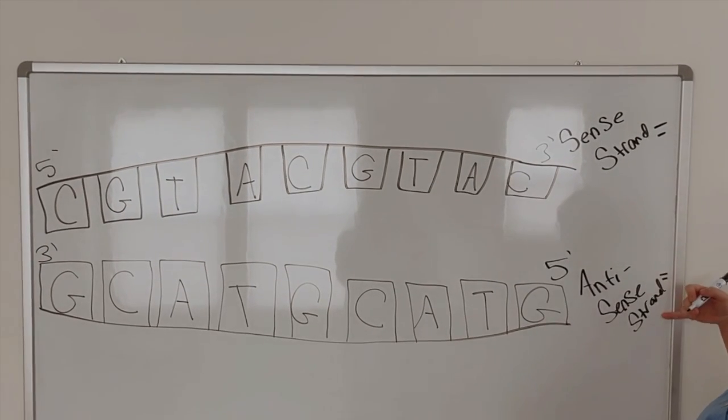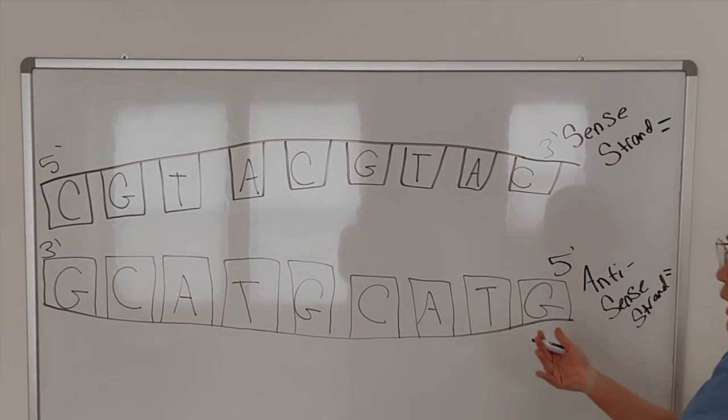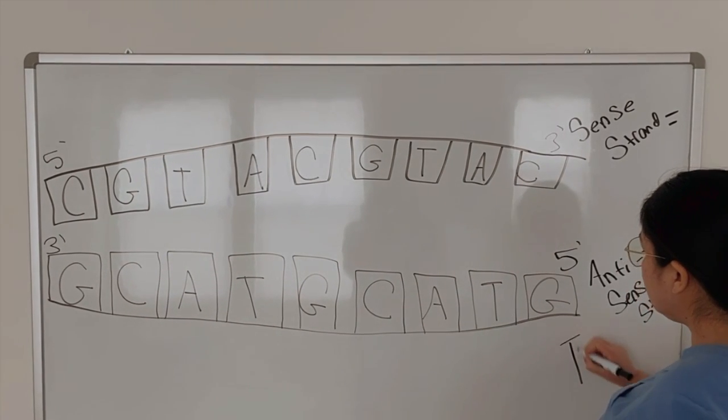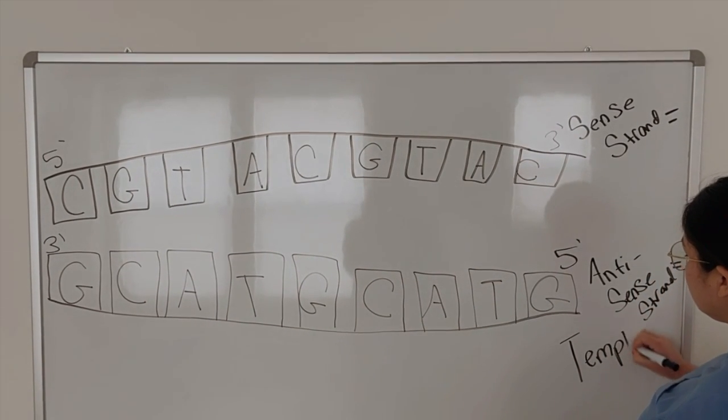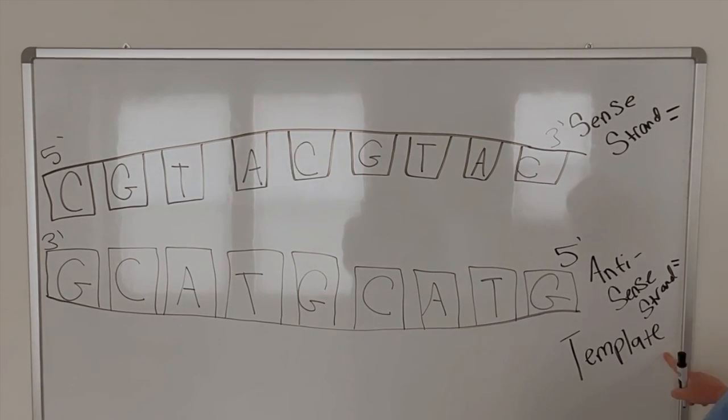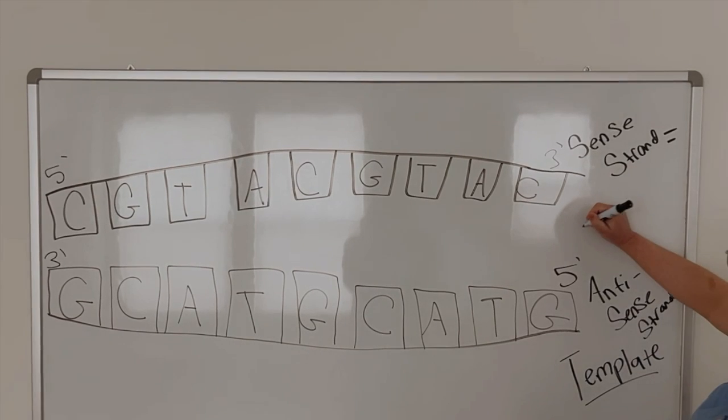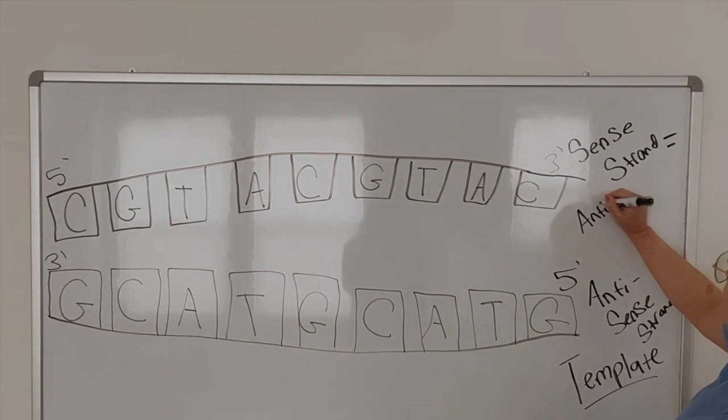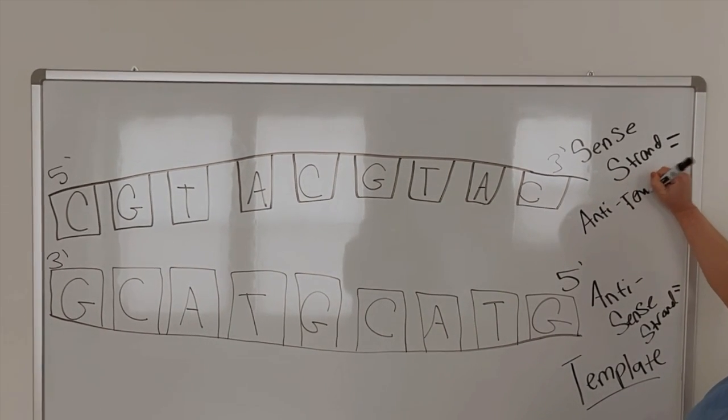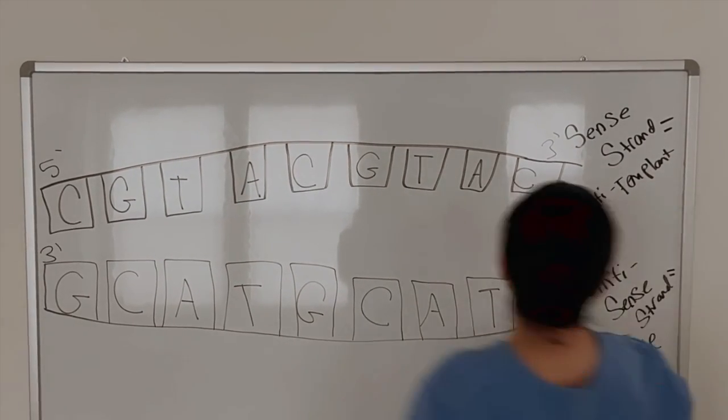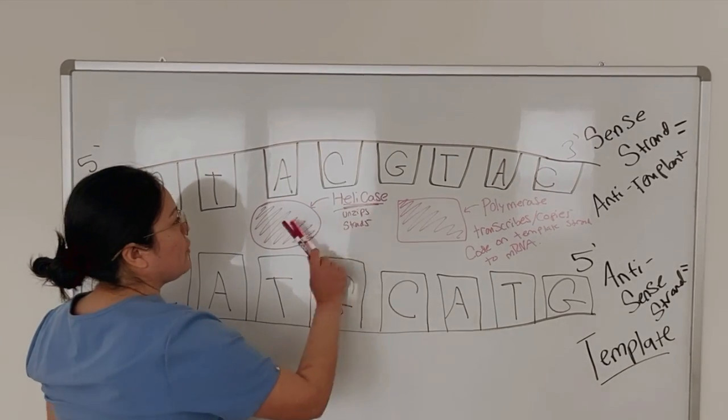Also know that your anti-sense and your sense strand have another name. So anti-sense can also be called your template strand. And then your sense strand can also be called your anti-template. And you'll see why in a minute.